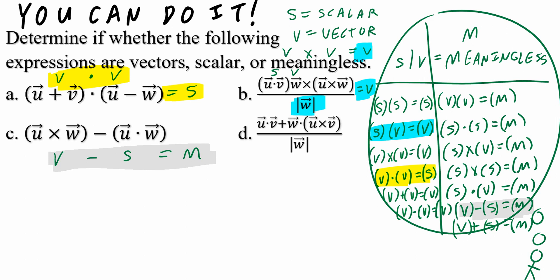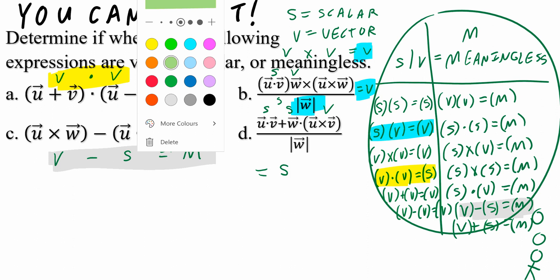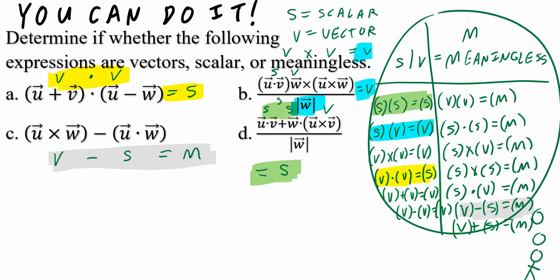Part D: the dot product of vector U and V, plus vector W dotted into (vector U cross vector V), all over the magnitude of vector W. The dot product of two vectors is a scalar. Vector U cross vector V is a vector, and vector W dotted into that vector is a scalar. Adding two scalars gives a scalar, and dividing by the magnitude — also a scalar — keeps it scalar. So the final answer is scalar. Multiplying and dividing scalars all collapses into the rule: scalar times scalar equals scalar.